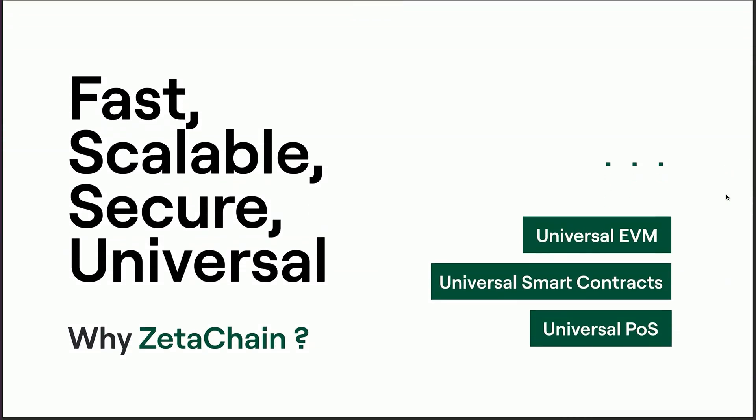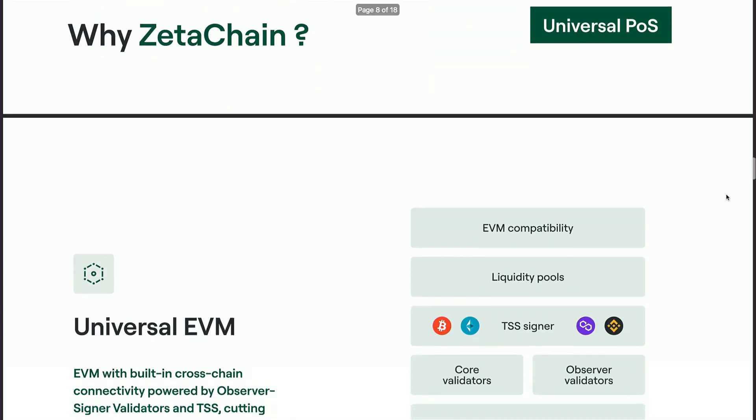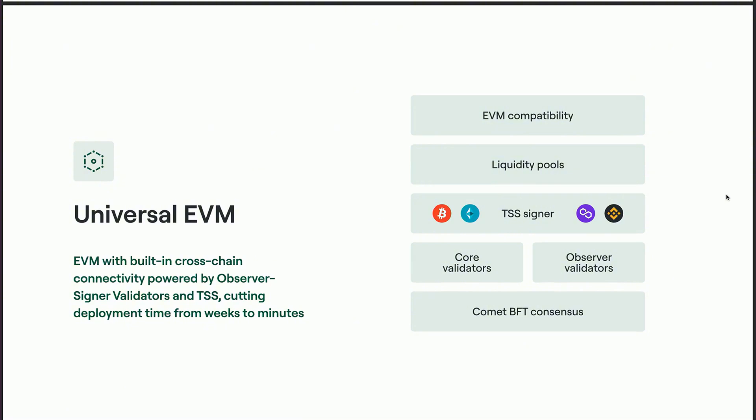ZetaChain has three unique features. We're not focused on TPS, faster, better, decentralized — the typical trifecta for new L1s/L2s. ZetaChain is focused on the interoperability layer at a smart contract level. Compared to most messaging protocols, ZetaChain has a common smart contract layer that's able to connect to any chain. We have the ability to read and write smart contracts across any chain. A user on Ethereum or Solana can use their same wallets, gas assets, and stables without any bridging or wrapping.